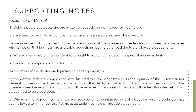In subsection 2, where after a debtor incurs a debt brought to account, or a debt in respect of money so lent, the debtor is adjudicated insolvent, or the affairs of the debtor are liquidated by arrangement, or the debtor makes a composition with his creditors — in the opinion of the Commissioner General, the amount by which the amount to be received will be less than the debt shall be deemed to be a bad debt.